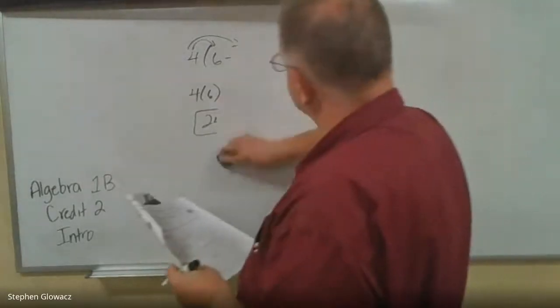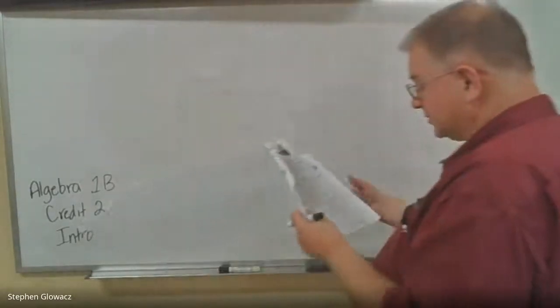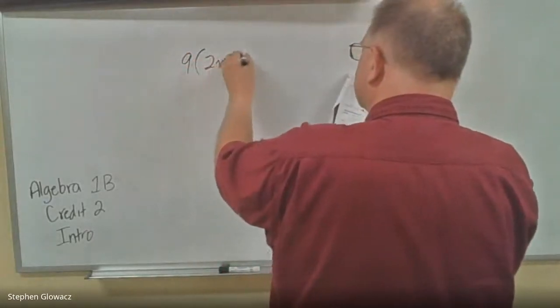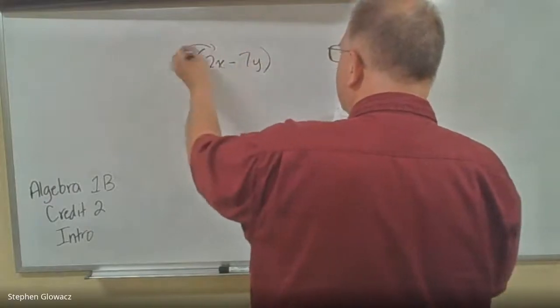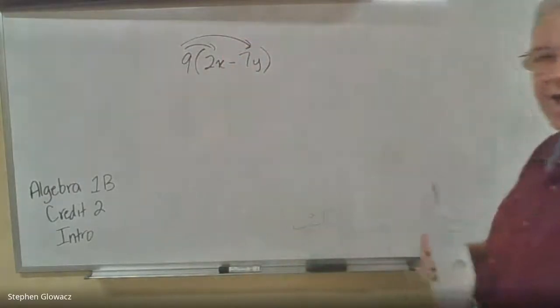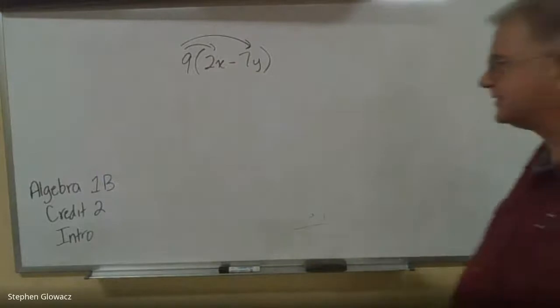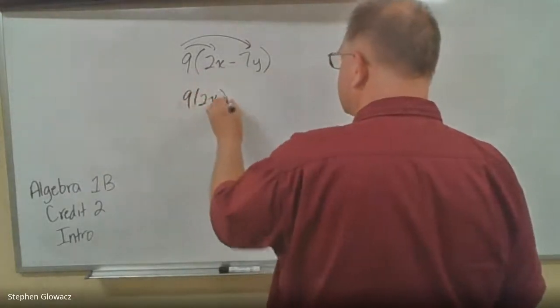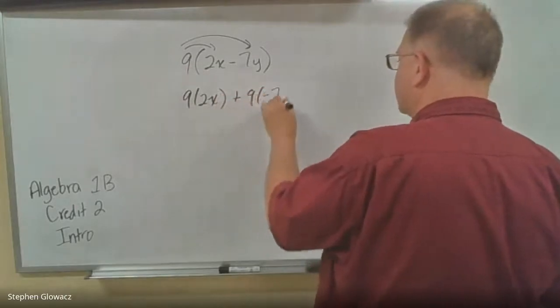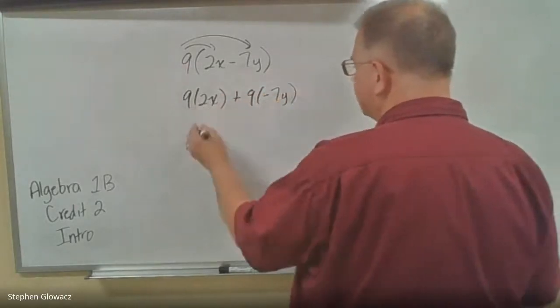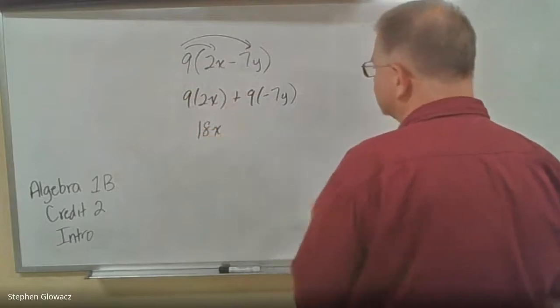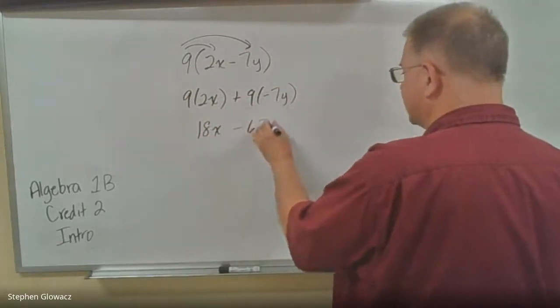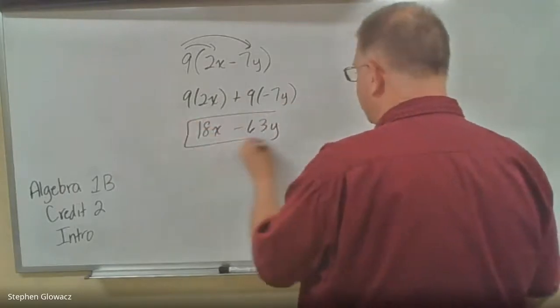Number 6, we've got 9 times 2X minus 7Y. Same thing, we're going to distribute that 9 to what's inside the parentheses. We've got 9 times 2X and then 9 times negative 7Y. 9 times 2 is 18, so 18X. 9 times negative 7 is negative 63Y. And that is it.